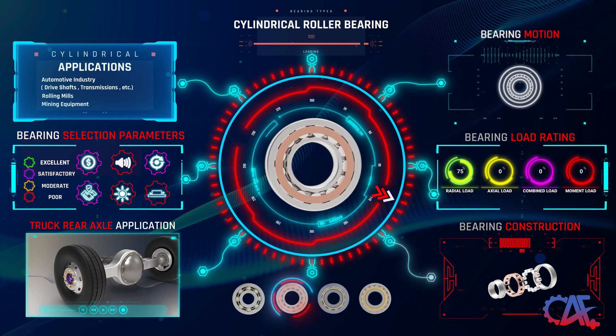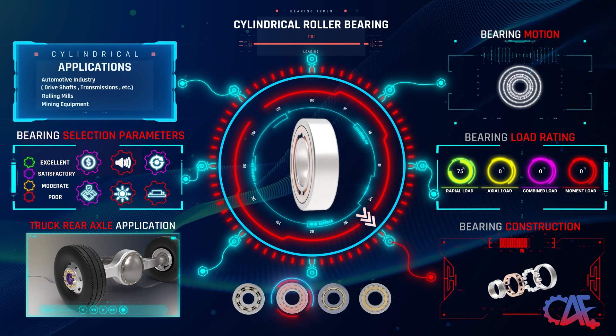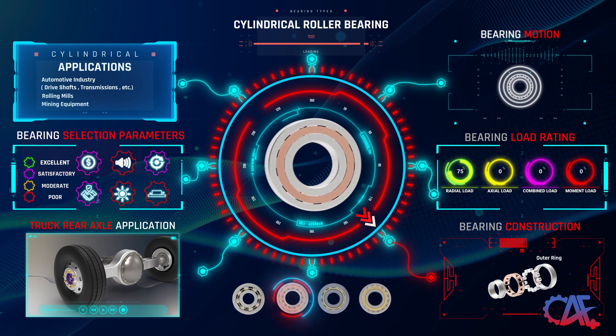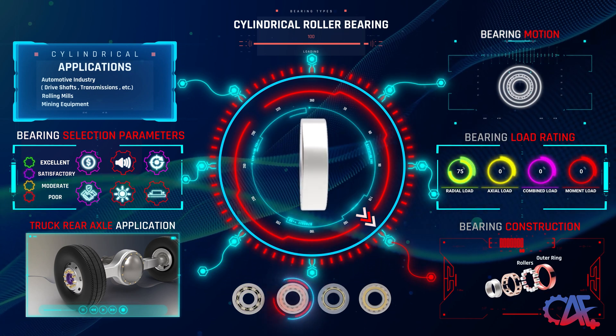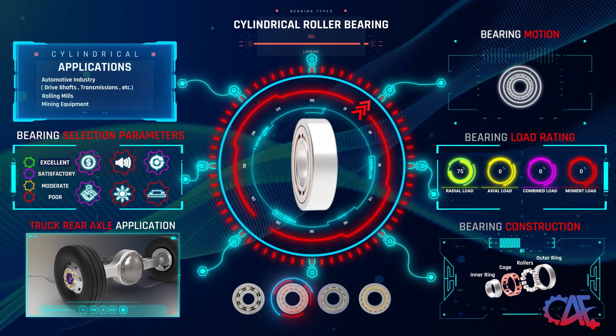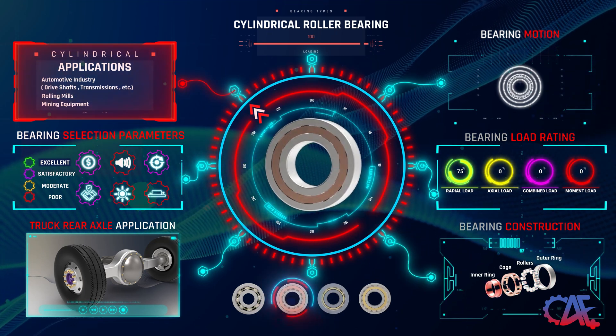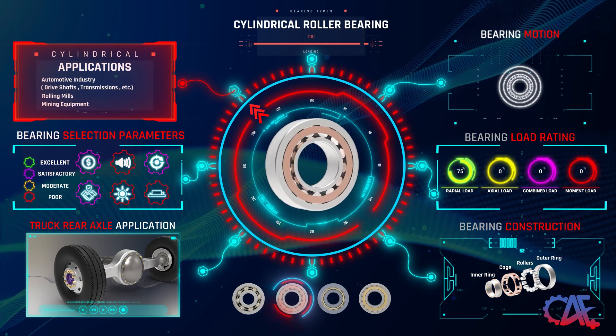While structurally similar to ball bearings, this bearing comprises four main components: an outer ring, cylindrical rollers, a cage to secure the rollers, and an inner ring. They find applications in sectors like automotive industries, rolling mills, and mining equipment.